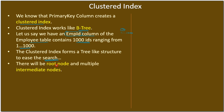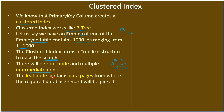There will be a root node and multiple intermediate nodes in the B-tree structure. When the B-tree is formed, we can identify a root node, intermediate nodes, and leaf nodes. The leaf nodes contain data pages from where the actual database records will be picked.